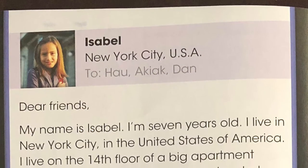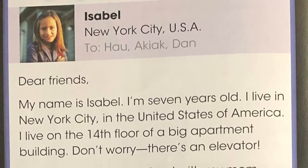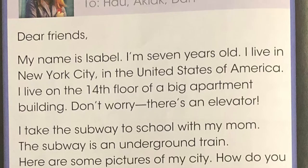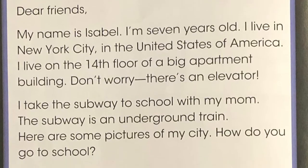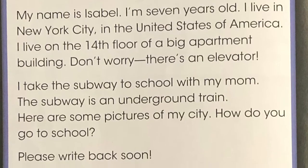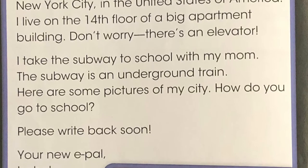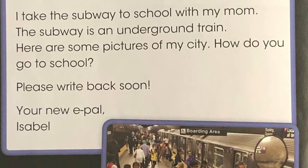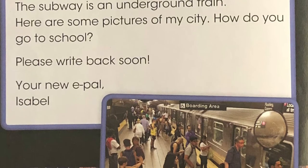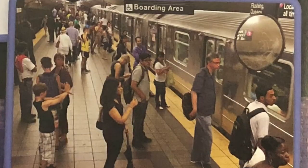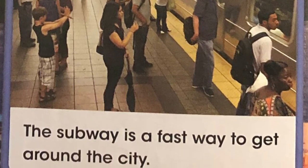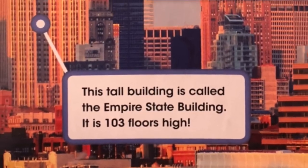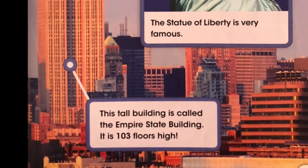Isabel, New York City, USA. To Hao, Akiak, Dan. Dear friends, my name is Isabel. I'm 7 years old. I live in New York City in the United States of America. I live on the 14th floor of a big apartment building. Don't worry, there's an elevator! I take the subway to school with my mom. The subway is an underground train. Here are some pictures of my city. How do you go to school? Please write back soon. Your new e-pal, Isabel. The subway is a fast way to get around the city. The Statue of Liberty is very famous. This tall building is called the Empire State Building — it is 103 floors high.